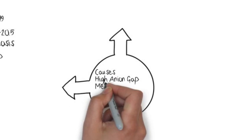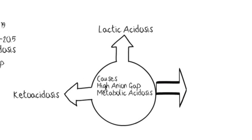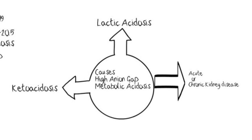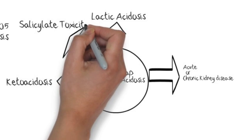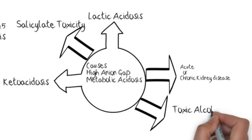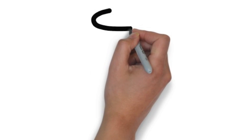The common causes of high anion gap metabolic acidosis are: ketoacidosis, usually seen in diabetic patients; lactic acidosis, usually seen in septic patients with hypotension; acute or chronic kidney disease; salicylate toxicity; and toxic alcohol ingestion — especially methanol, ethylene glycol, and isopropyl alcohol.